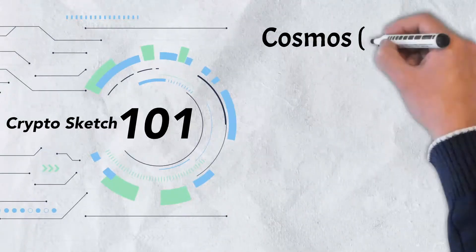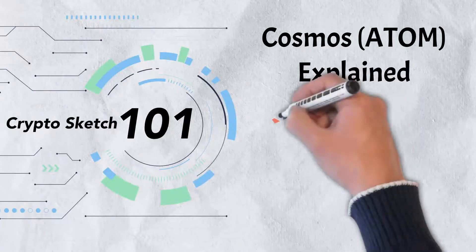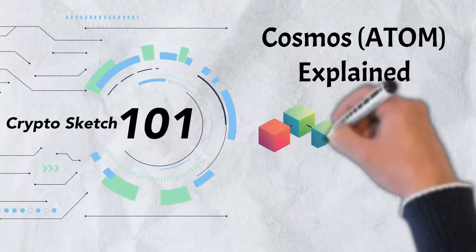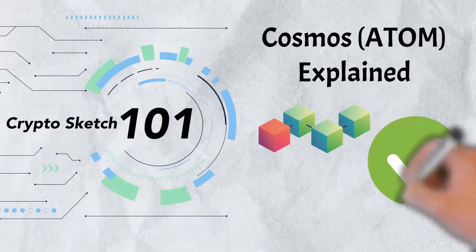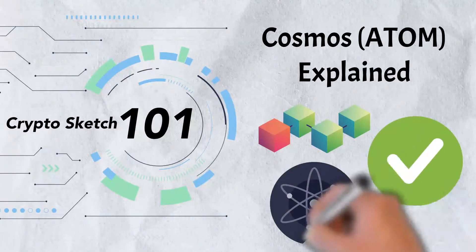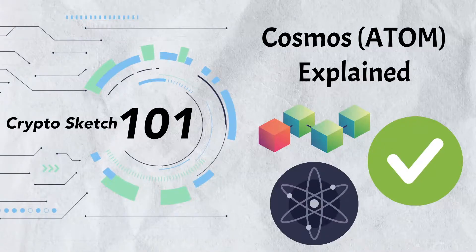In today's video, we're going to be breaking down Cosmos. We'll take a look at some of the problems that exist with blockchains today, and the vision of Cosmos to provide solutions to these problems. We'll also take a quick look at the native token of Cosmos, Atom. So let's get into it.